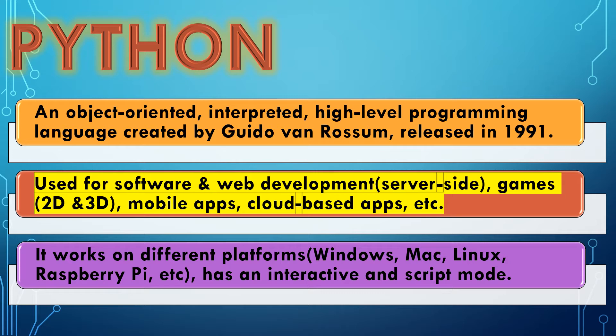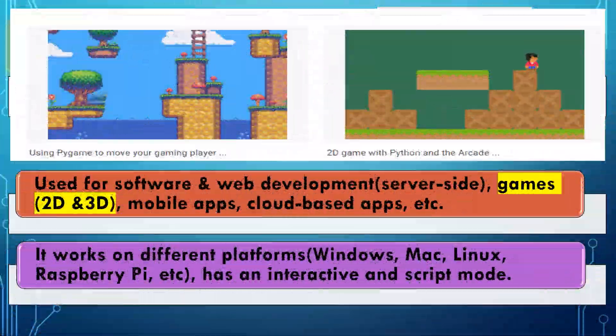Python offers many choices for web development: frameworks such as Django and Pyramid, micro-frameworks such as Flask and Bottle, and advanced content management systems such as Plone and Django CMS. You can also use Pygame to move your gaming player in a 2D game with Python and the Arcade library. If you're excited to see more samples of 2D and 3D games created with Python, there are lots of video tutorials on YouTube, or you may wait for upcoming video tutorials about gaming and Python.